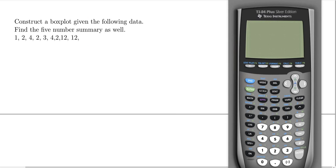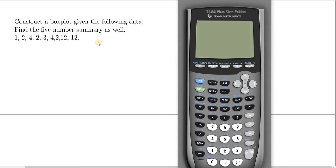Hi everyone. In this video I'm going to show you how to construct a box plot and find the five number summary in the TI-84 calculator. The first thing you want to do is enter the data into the calculator. To do that you want to go to the button that says STAT, so let's go ahead and press STAT.